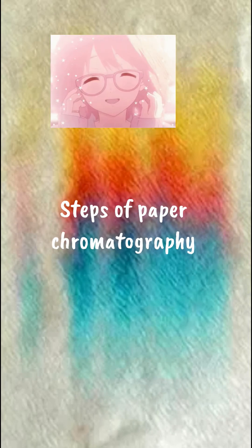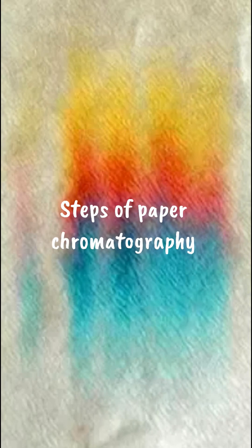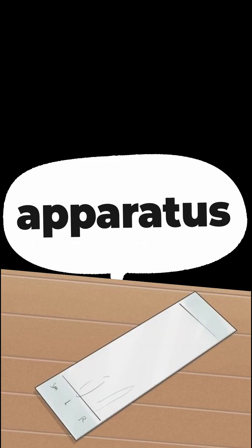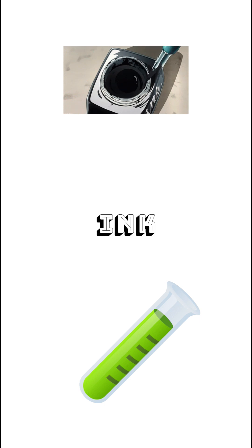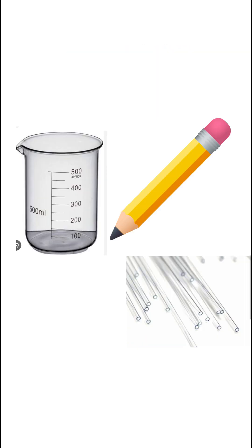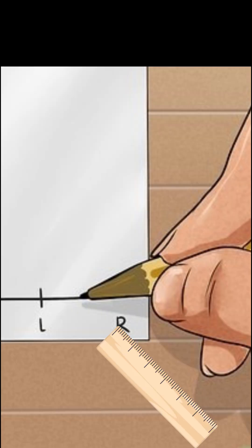Welcome to Bio Mindscape. Today we are going to learn about the various steps of paper chromatography. First, we need to gather materials: a chromatography paper or filter paper, a solvent such as water or alcohol, a sample mixture like plant pigment, ink, or a chemical, a beaker or glass container, a pencil, a capillary tube or dropper, and a ruler.